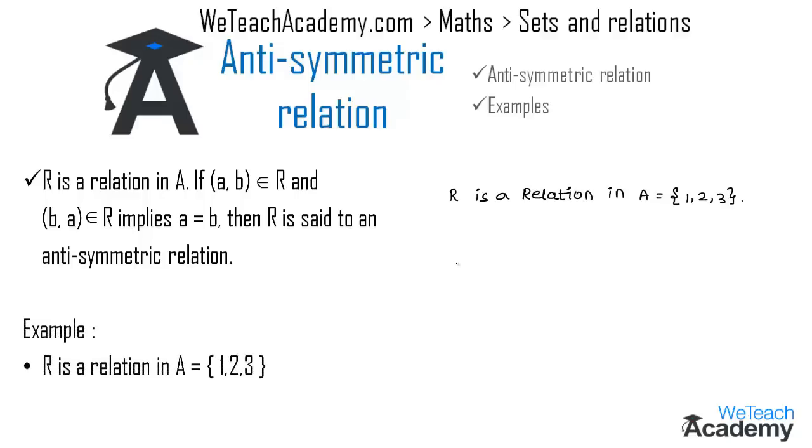So here we have the example as R is a relation in the set A = {1, 2, 3}. And now let us write the ordered pairs of R: (1,1), (2,2), (2,3), and (1,3).